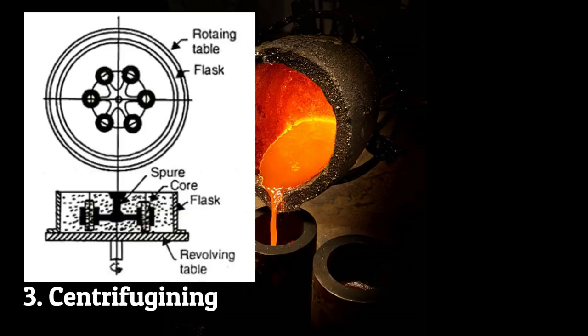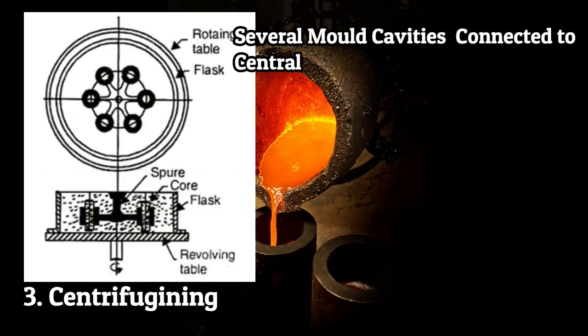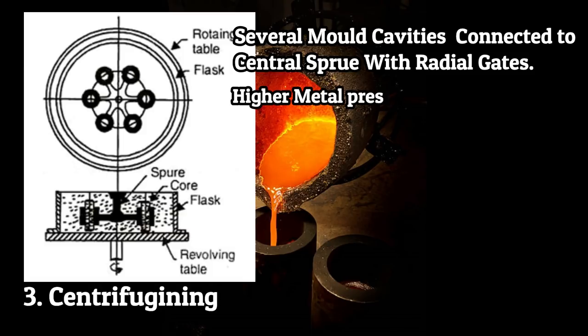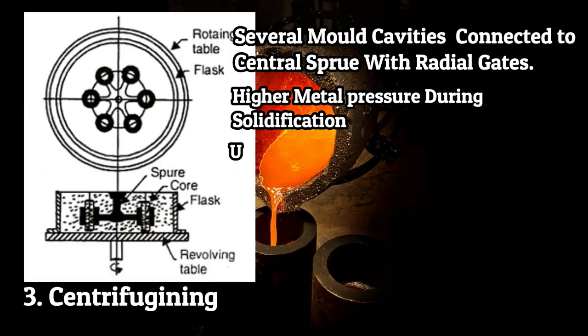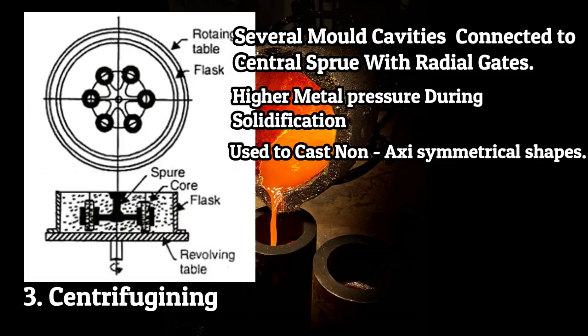The last type is centrifuging. In this process, there are several mold cavities connected with a central sprue with radial gates. This process uses higher metal pressure during solidification. It is used to cast shapes which are not axisymmetrical, and is only suitable for small objects.